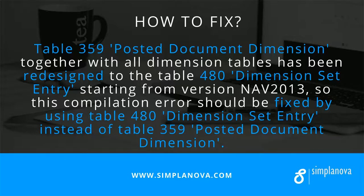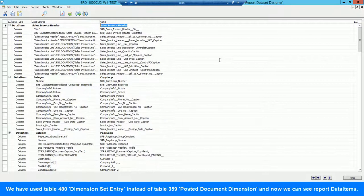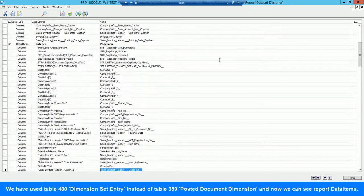This error appeared because table 359, together with all dimension tables, has been redesigned to table 480 starting from NAV version 2013. We can fix the report by using table 480 Dimension Set Entry instead of the missing table 359 Posted Document Dimension.